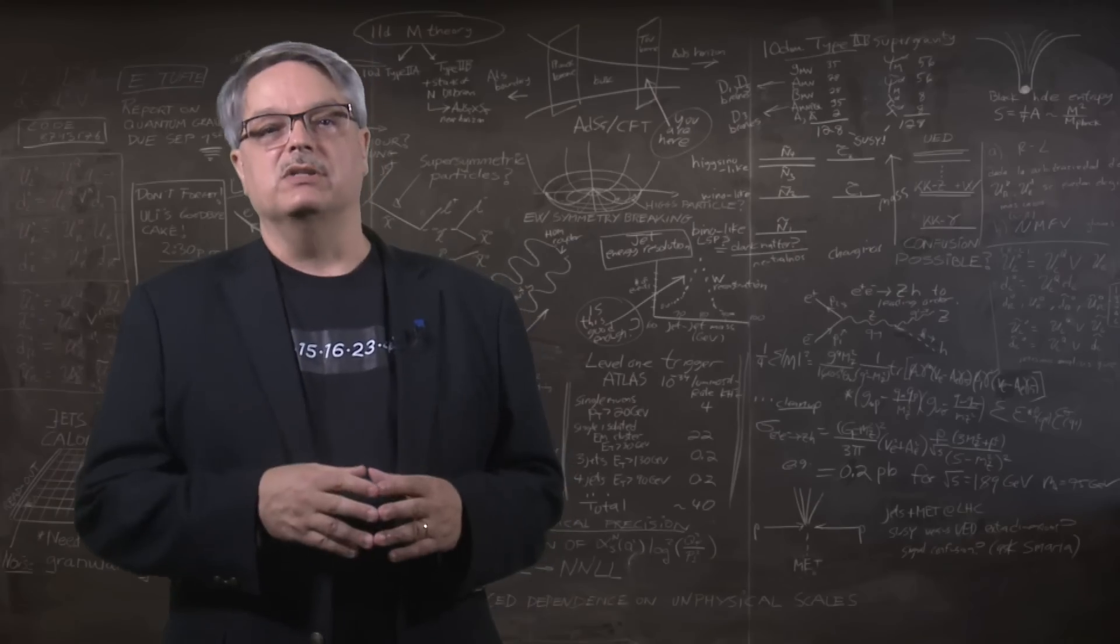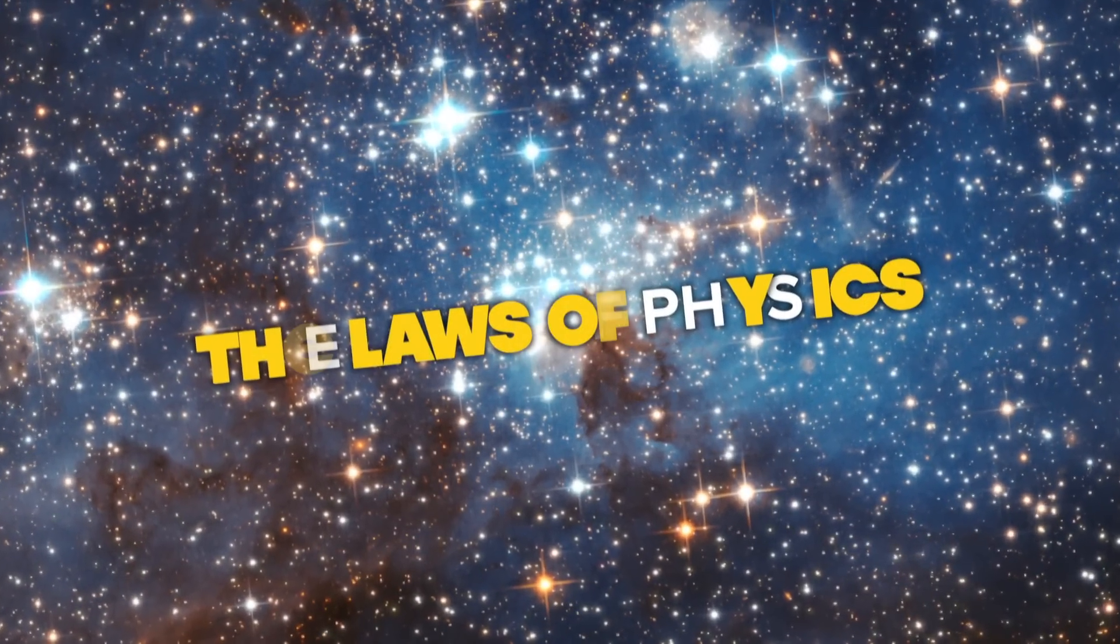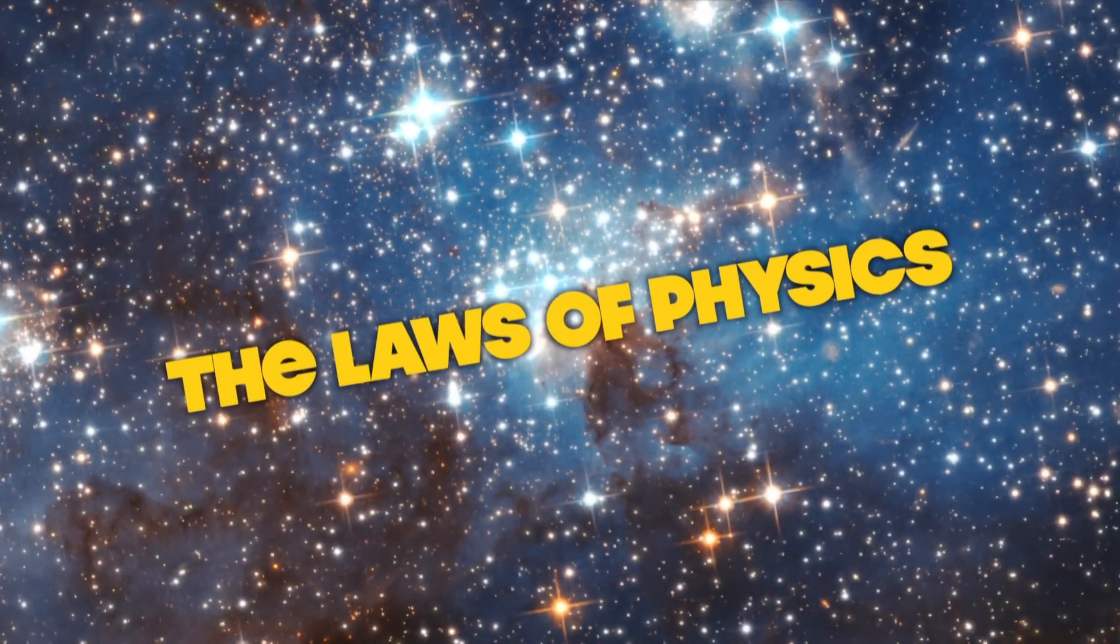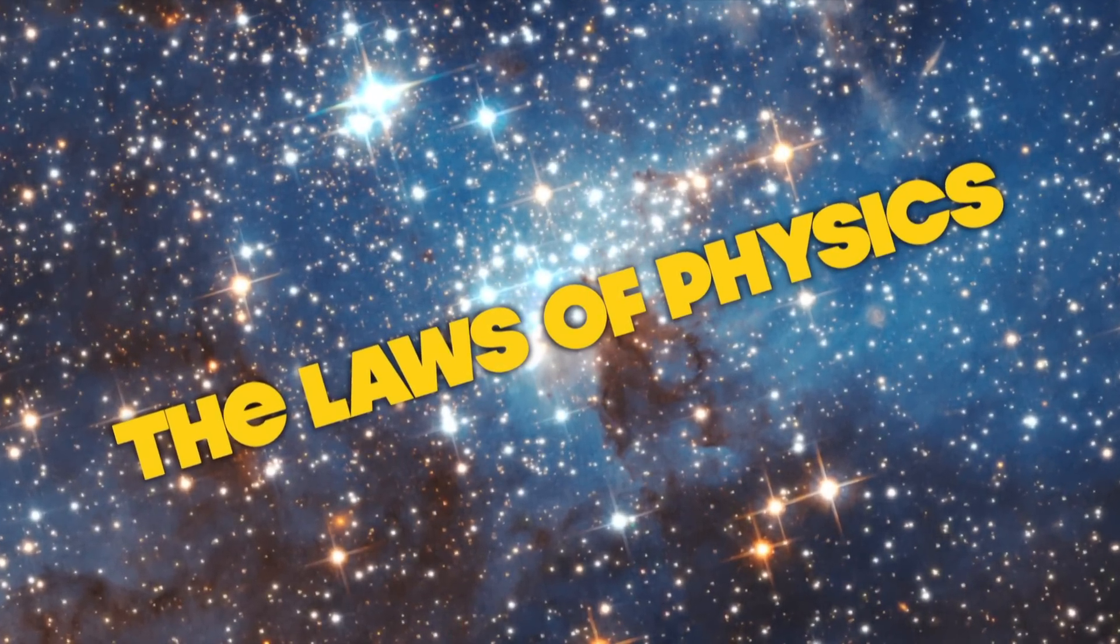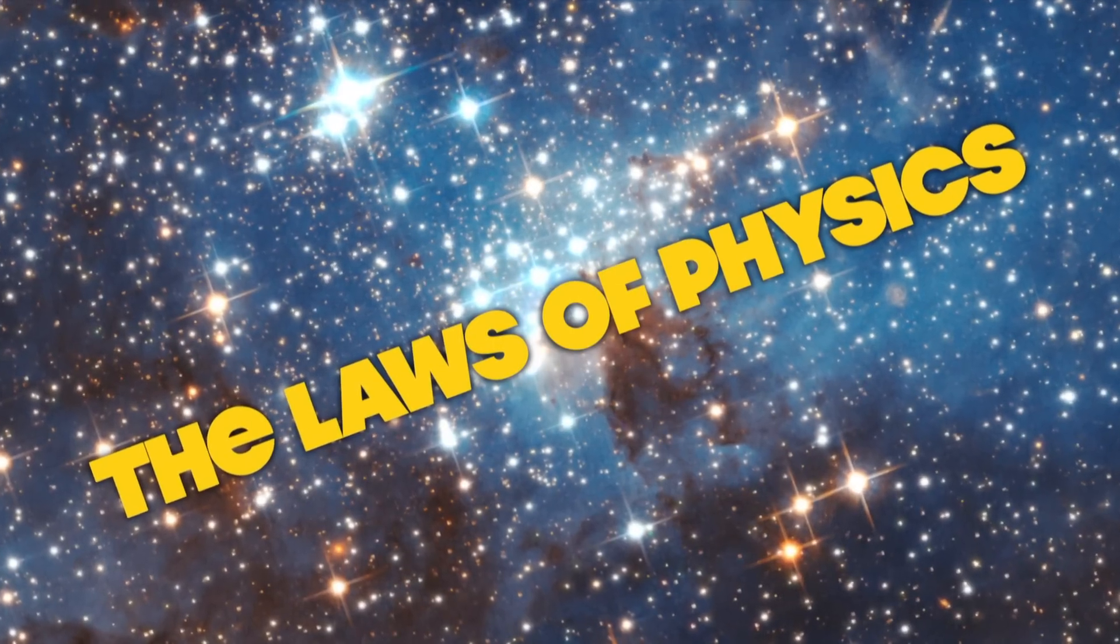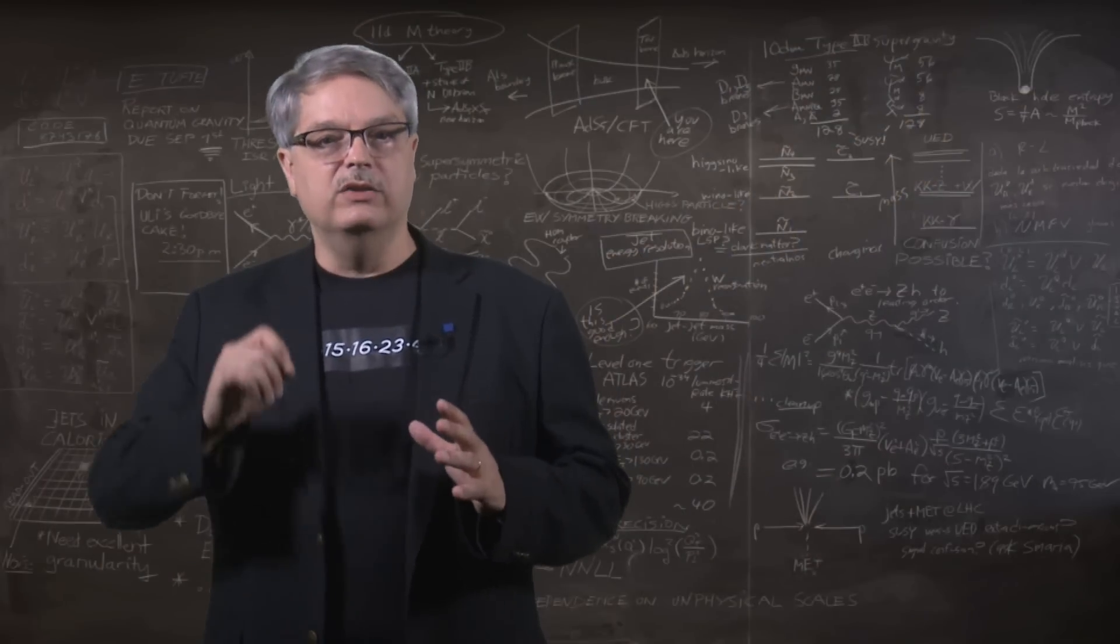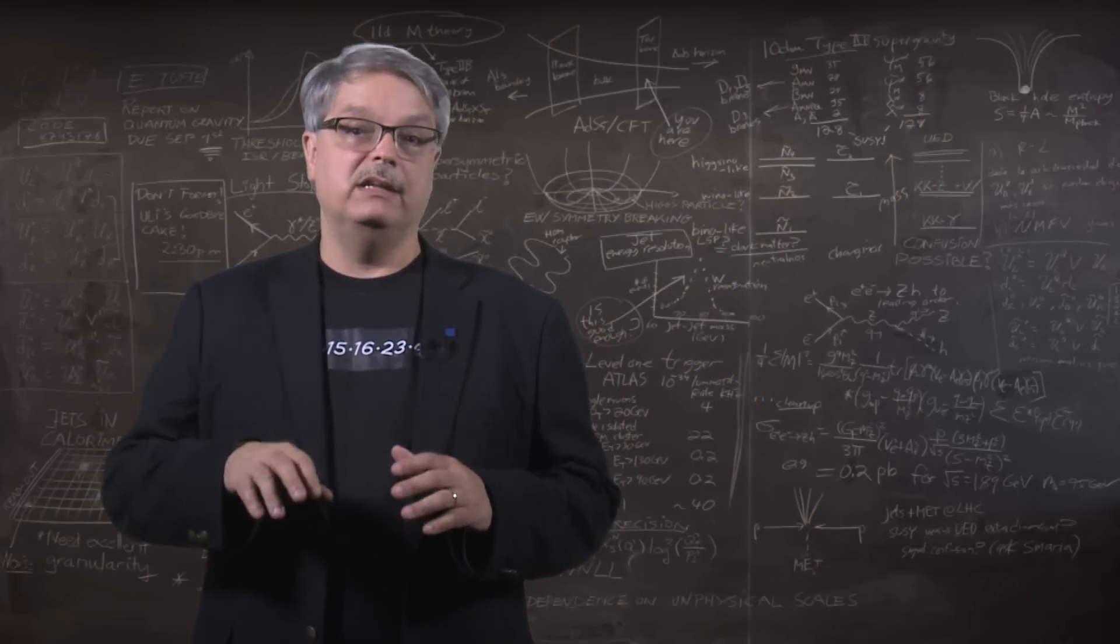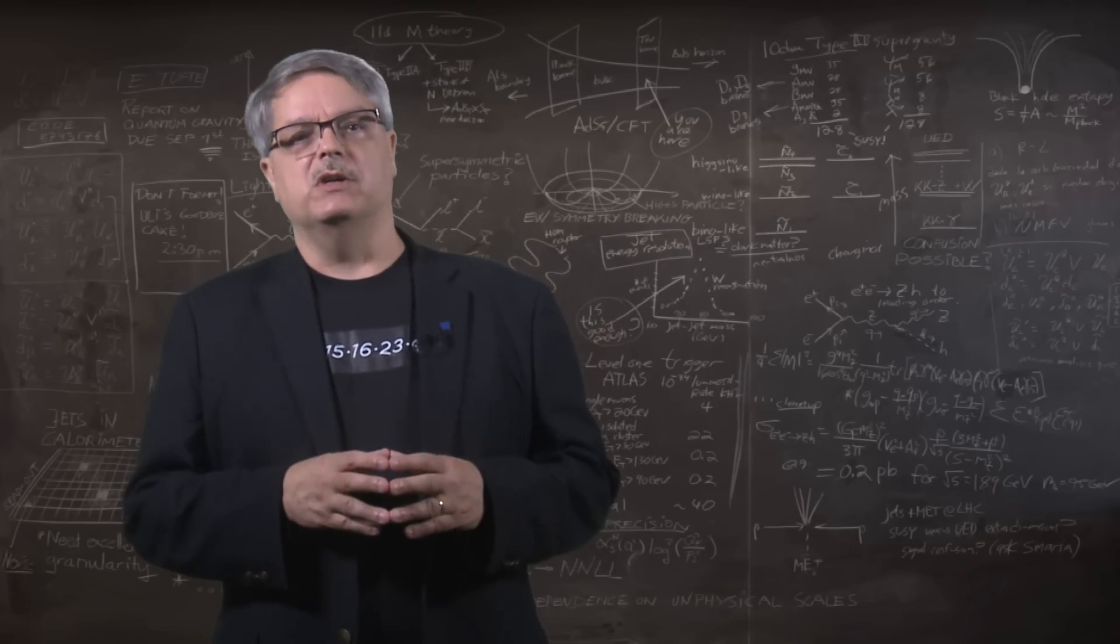So first, we have to ask ourselves if that's weird. After all, maybe if we change the laws of physics just a little bit, nothing much changes and the universe looks more or less like it does now. Then the fact that we live in the kind of universe that we do wouldn't be all that surprising. I could give tons and tons of examples of tiny changes we could make and what the consequences would be, but let's just pick one example for illustration.